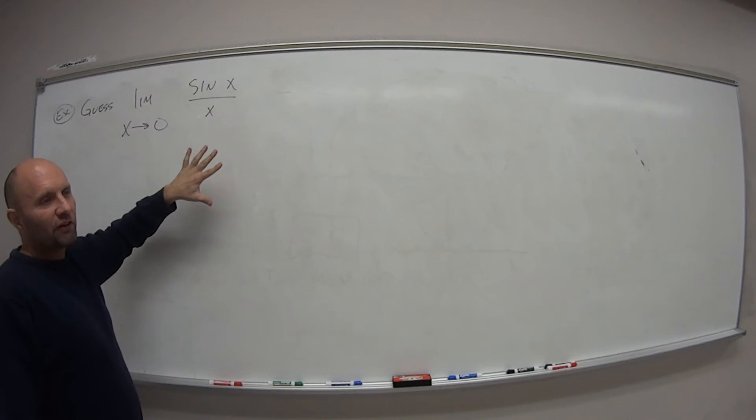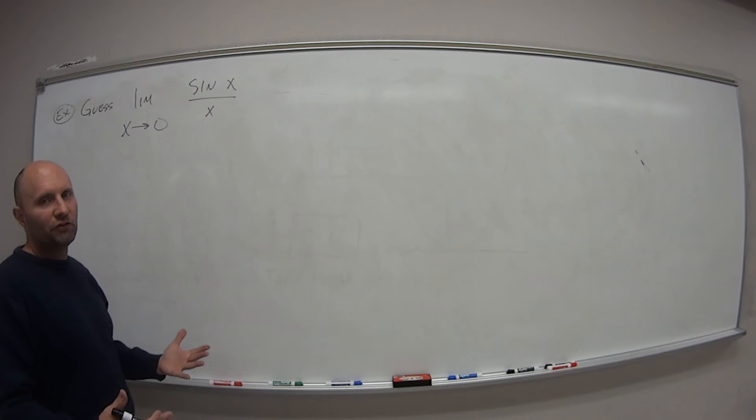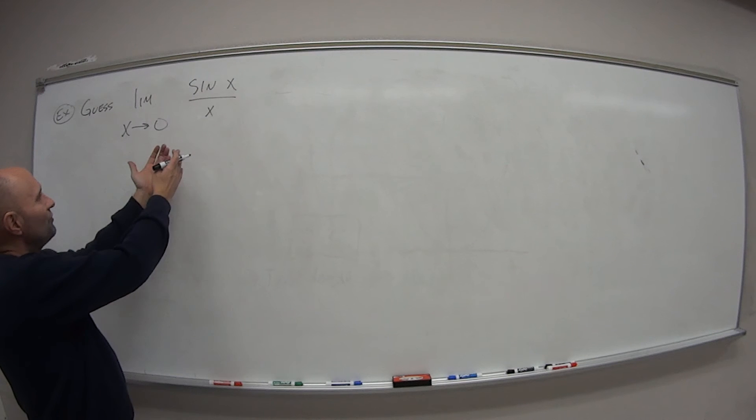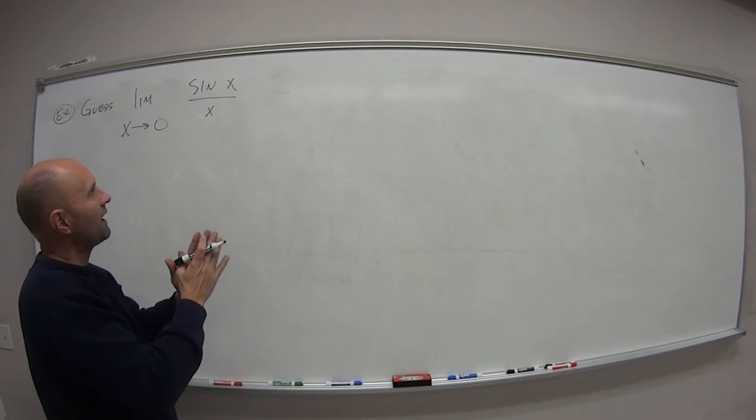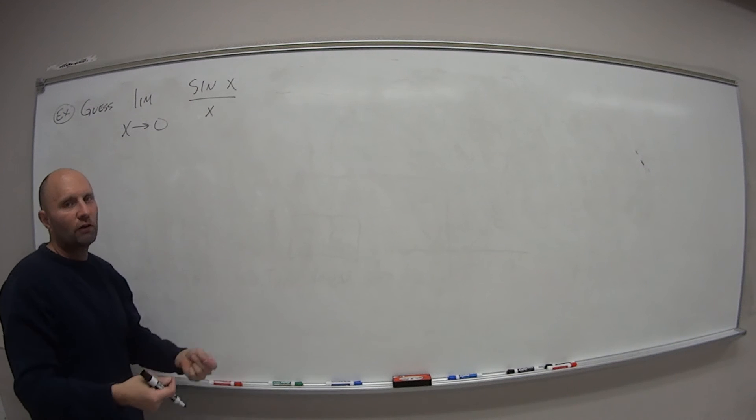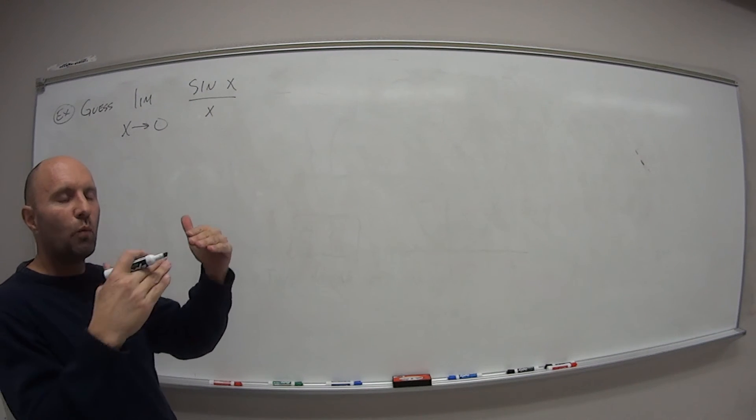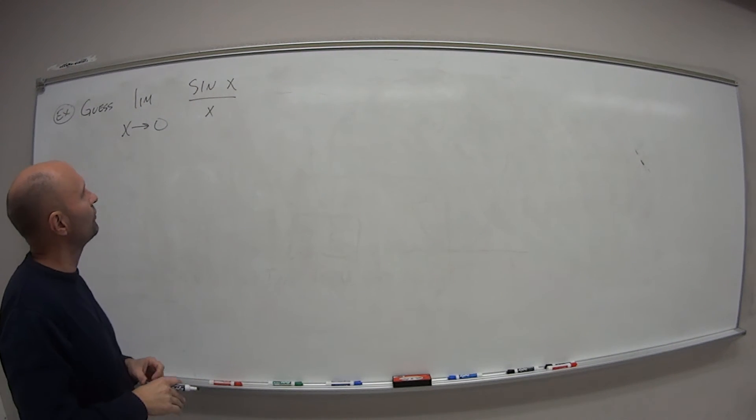So just as in the first example we looked at, we're going to have to build a table. Pick values just on the negative side. Pick values just on the positive side from 0. Calculate what those numbers are and see what number does that get closer and closer to.